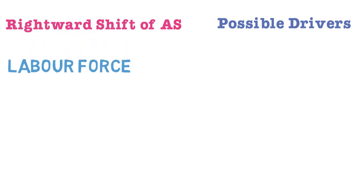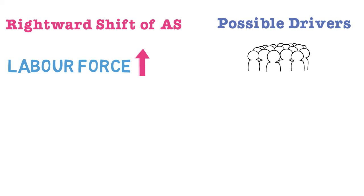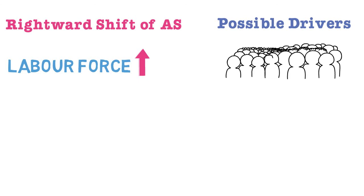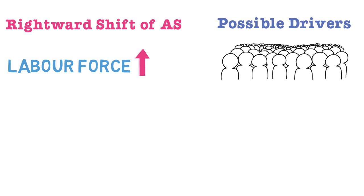A rightward shift of the aggregate supply curve can be caused initially by the labor force. If the labor force increases, this will shift the AS curve to the right. This can happen for a number of reasons: for example, population increasing, higher labor force participation, perhaps higher female participation, or higher wages enticing back discouraged workers. When the labor force increases, generally the aggregate supply curve shifts to the right.